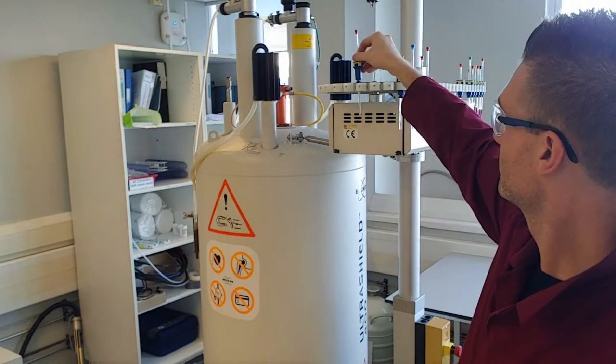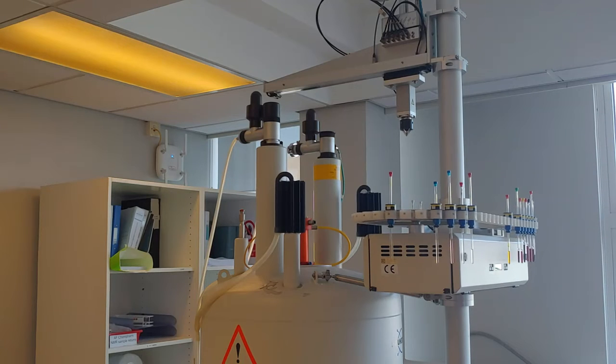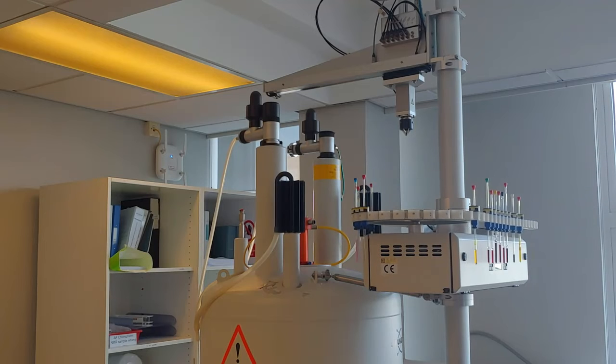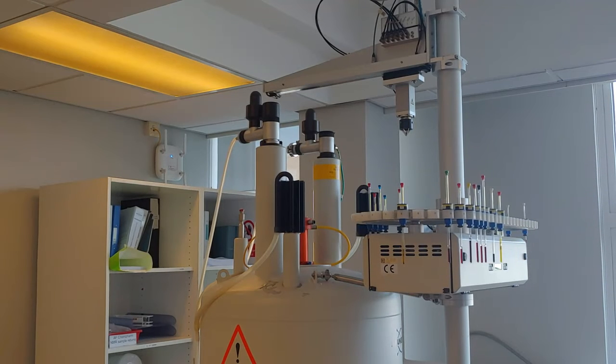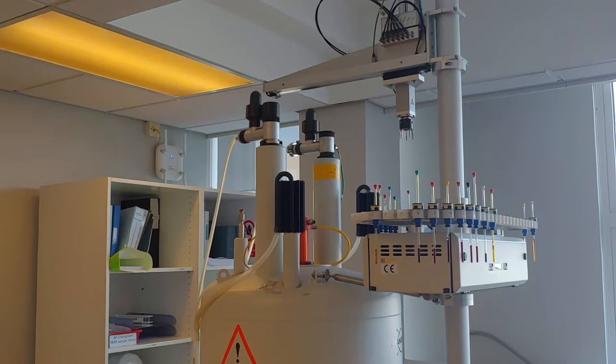We then place it onto the auto sampler and then we go to the computer to run our spectrum. So the auto sampler will move to our sample, just sped this part of the video up because otherwise it takes a long time, and once it reaches our sample the robot arm at the top will come down and pick it up.